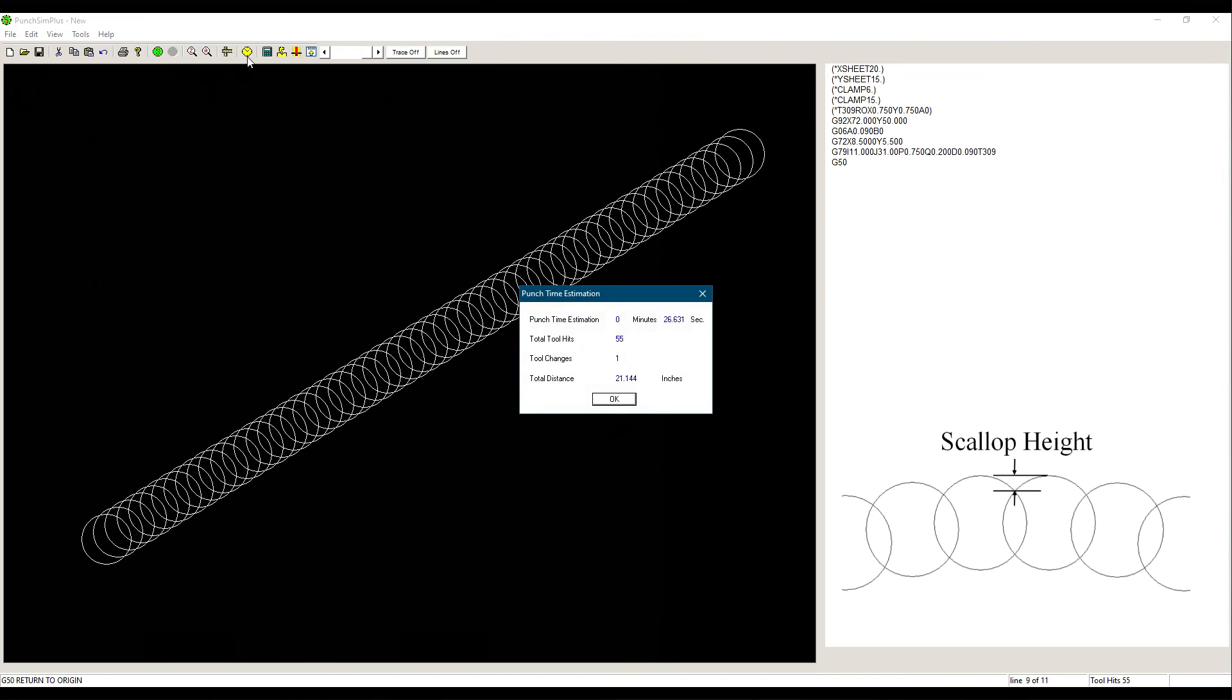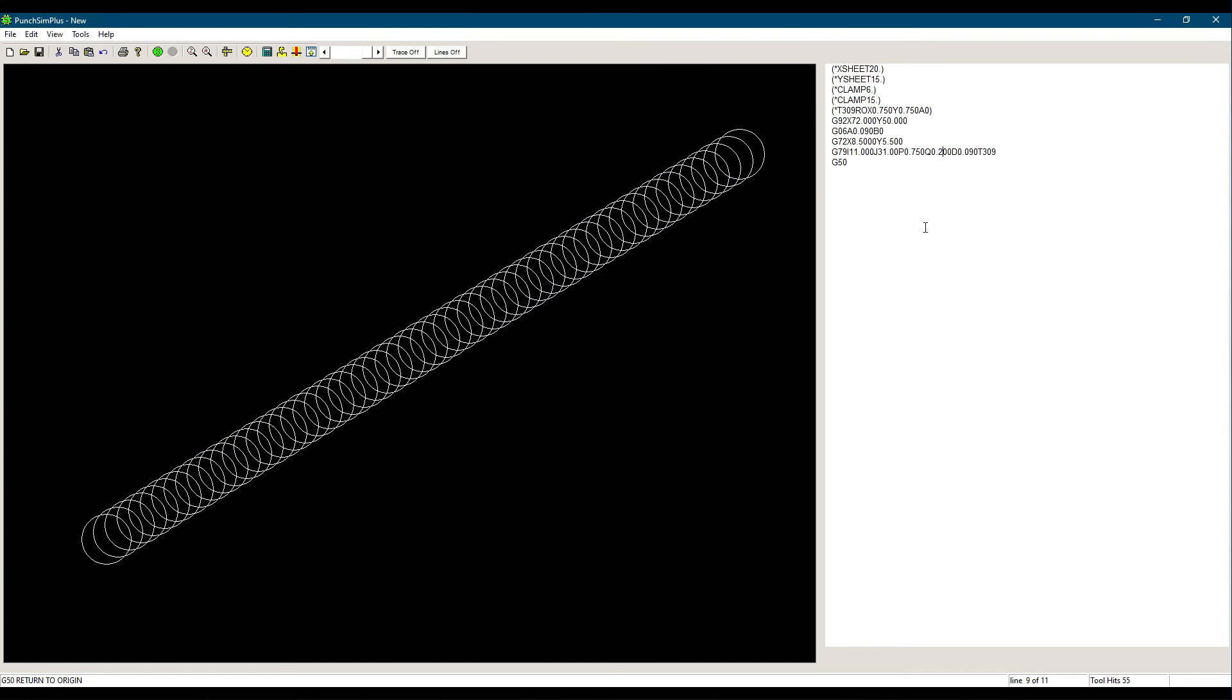On the other hand, the smaller the Q, the more hits and the longer the processing time, but the finish will be better.